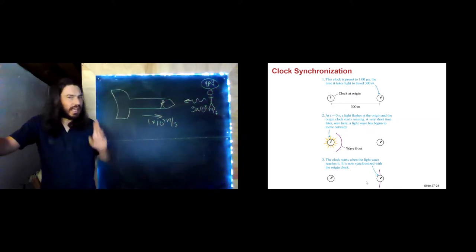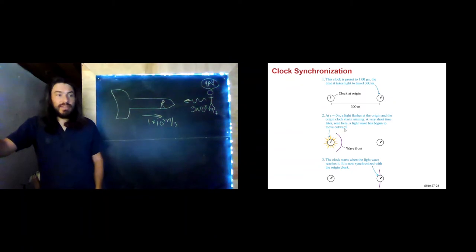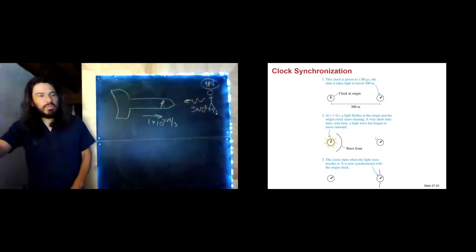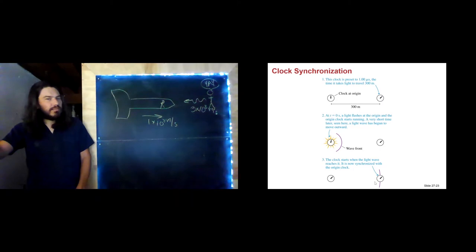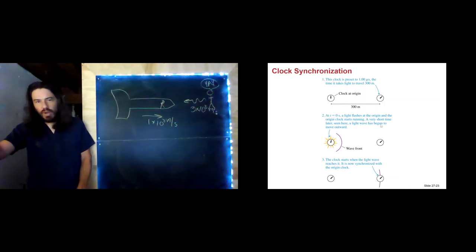One way to synchronize the two clocks: have the first clock turn on and at that instant send out a flash of light. That flash travels to the second clock, which has been preset to one microsecond. Once that wavefront hits, it starts going, and now both clocks are truly measuring the same time. An implied assumption is that in any reference frame, even spatially separated clocks have been synchronized.